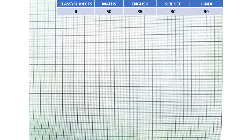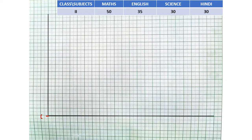Now let's see how to prepare a bar graph. For drawing a bar graph, firstly we have to draw two lines, one vertical and one horizontal. Both lines are at an angle of 90 degrees with each other. The joining point of these lines is marked as 0.